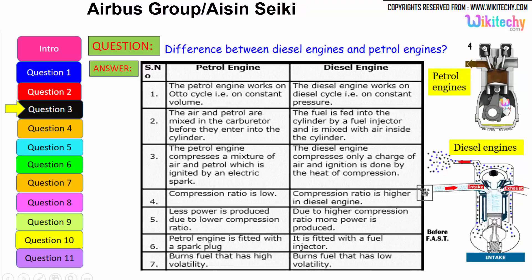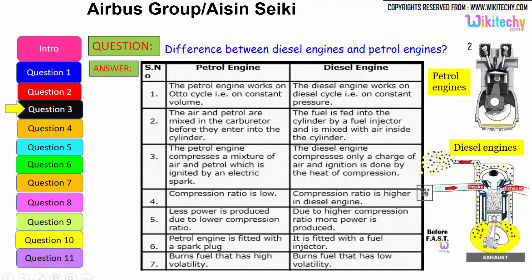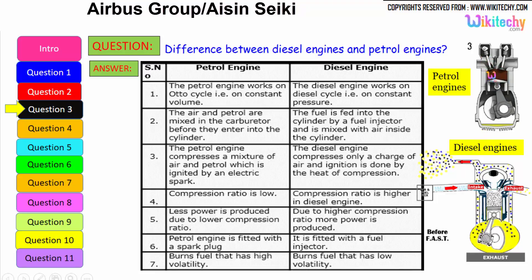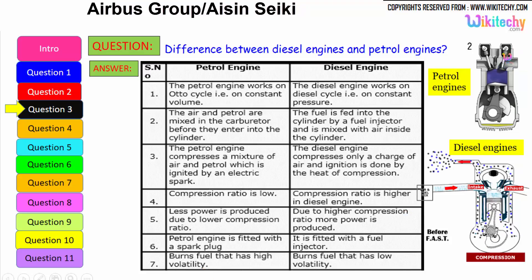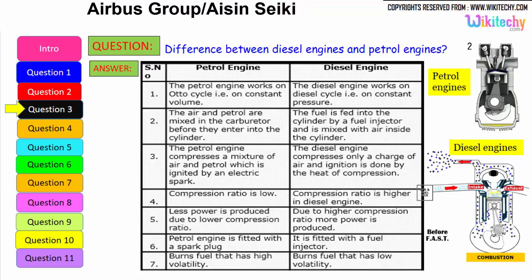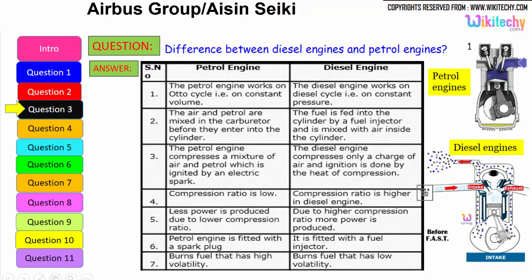The diesel engine compresses only a charge of air and ignition is done by the heat of compression. The compression ratio is low in petrol engines whereas the compression ratio is higher in diesel engines. Less power is produced due to lower compression ratio; higher compression ratio means more power is produced. The petrol engine is fitted with a spark plug, while the diesel engine is fitted with a fuel injector. Petrol is a high volatility fuel, whereas diesel is a low volatility liquid. These are some of the differences between the petrol engine and diesel engine.